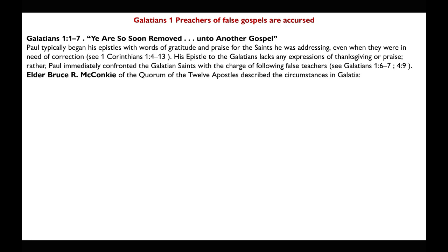Galatians chapter 1: Preachers of false gospels are accused (Galatians 1:1-7). Paul typically began his epistles with words of gratitude and praise for the saints he was addressing, even when they needed correction. His epistle to the Galatians lacks any expression of thanksgiving or praise; rather, Paul immediately confronted the Galatian saints with the charge of following false teachers.